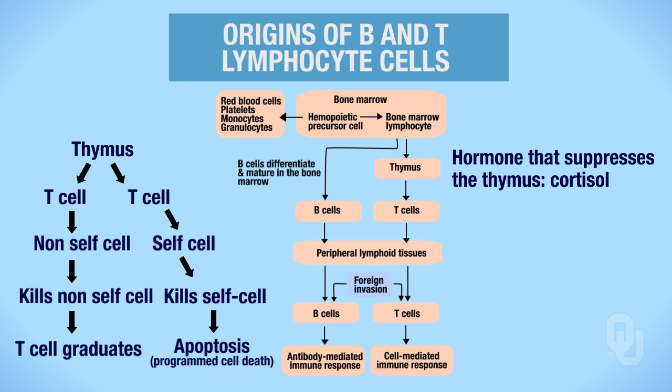So what we have is the thymus training and testing the T cells. If the T cells pass the test and graduate, they get to move on to the peripheral lymphoid tissues. Then they leave those tissues whenever there's a foreign invasion and mount a cell-mediated immune response. Those are the origins for your B and T cells.